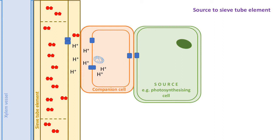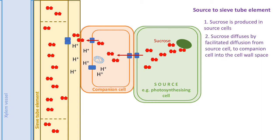Source to sieve tube element - getting sucrose into the phloem. What we'll do is go through the steps, and before each step I will show you the animation in the diagram, and on to step three in the diagram.